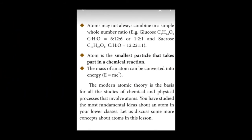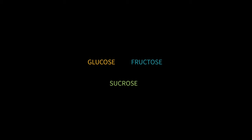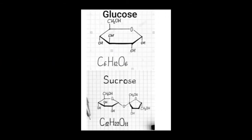Postulate number 5: atoms may not always combine in a simple whole number ratio. Let us understand this postulate with two examples: glucose and sucrose. The chemical formula of glucose is C6H12O6. In glucose, the ratio of carbon, hydrogen and oxygen atoms is 6:12:6. If we simplify the ratio, we get 1:2:1, which is a simple whole number ratio.